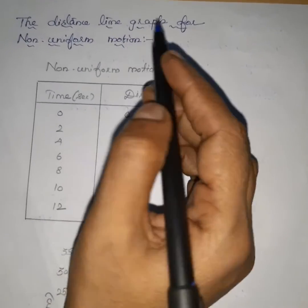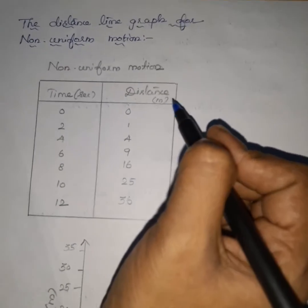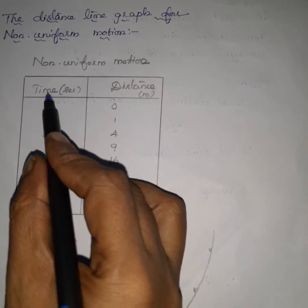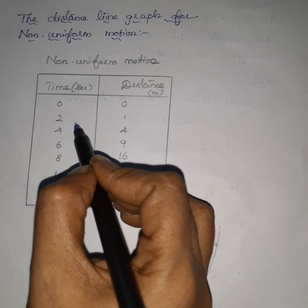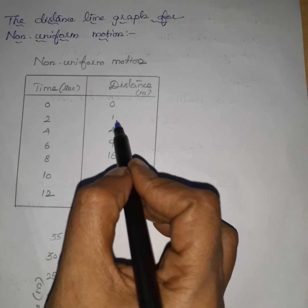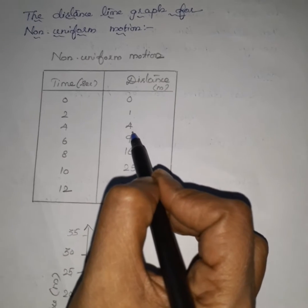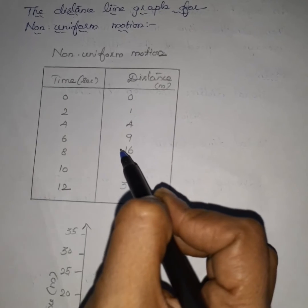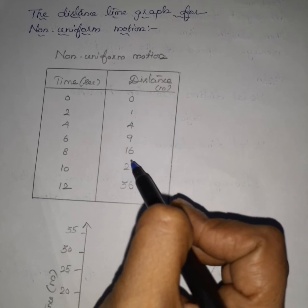Now the distance-time graph for non-uniform motion. Consider a car moving with different distances. Initially the car is at rest — time is zero, distance is zero. At 2 seconds the car covered 1 meter; at 4 seconds, 4 meters; at 6 seconds, 9 meters.